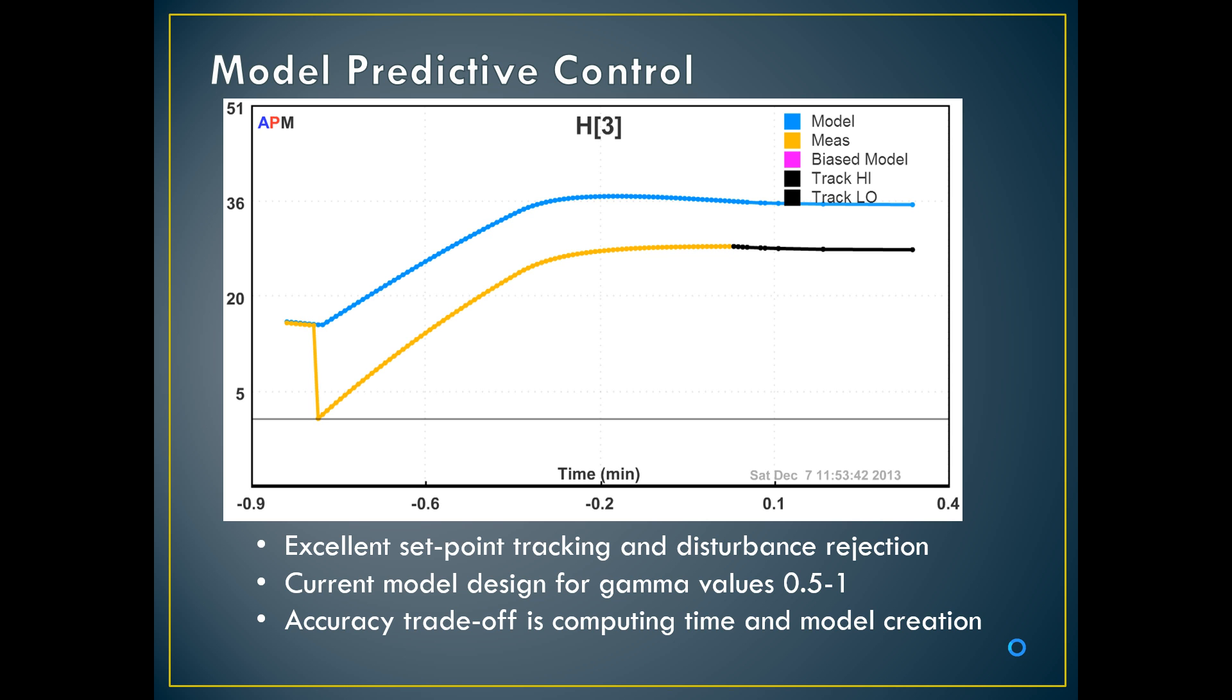For example in this graph above, we immediately changed the gamma value to see how it would respond. The blue curve shows how the model predicted it would need to respond to reject the disturbance in the pumps. As we can see, the measured curve in yellow immediately followed this model with the same slope.